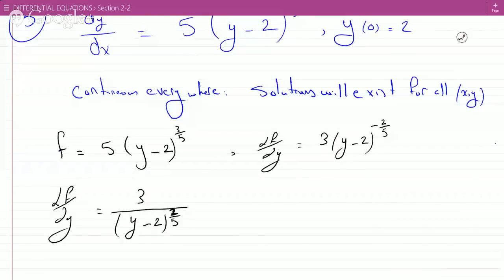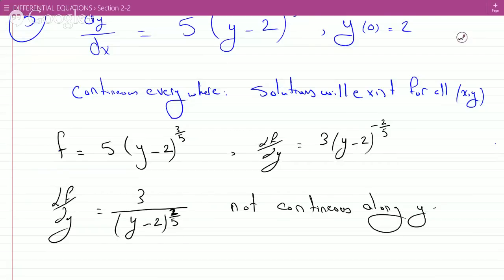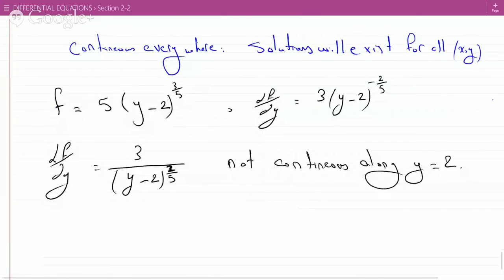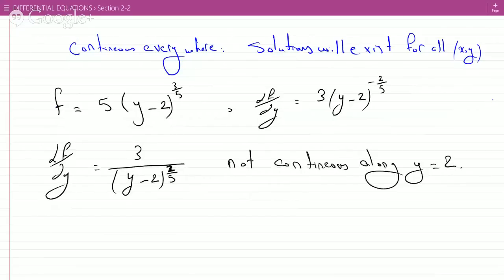∂f/∂y is not continuous along y equals 2. So perhaps solutions will exist and be unique everywhere except along y equals 2, according to the existence and uniqueness theorem.